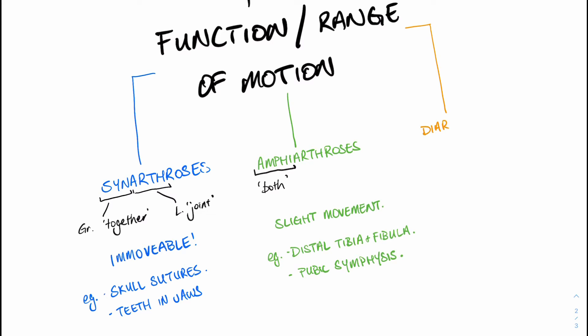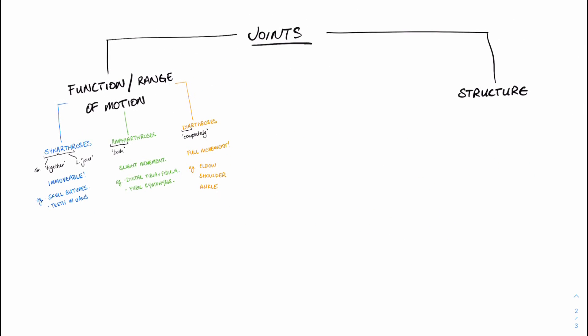The last type of classification based on function are diarthrotic joints or diarthroses. Dia meaning completely, so I think like diagnosis—a diagnosis is a complete understanding of an individual's condition. Completely in the sense that it's full movement. It can completely move in any way we want it to. Examples being the elbow, the shoulder, and the ankle.